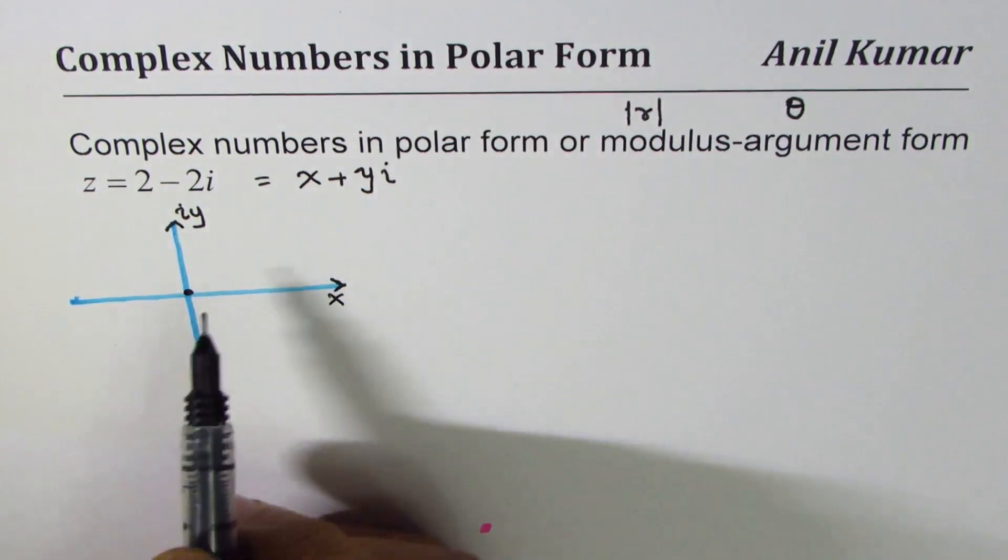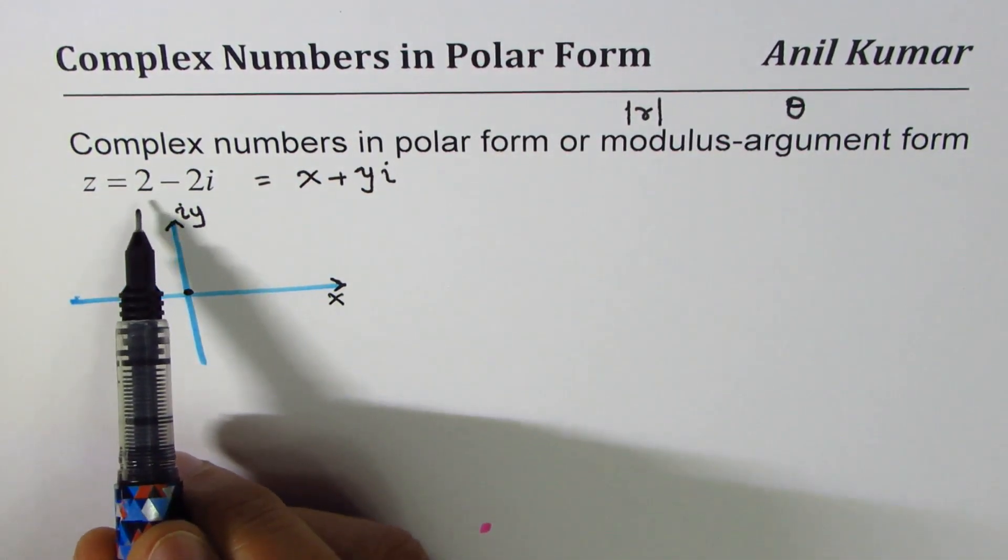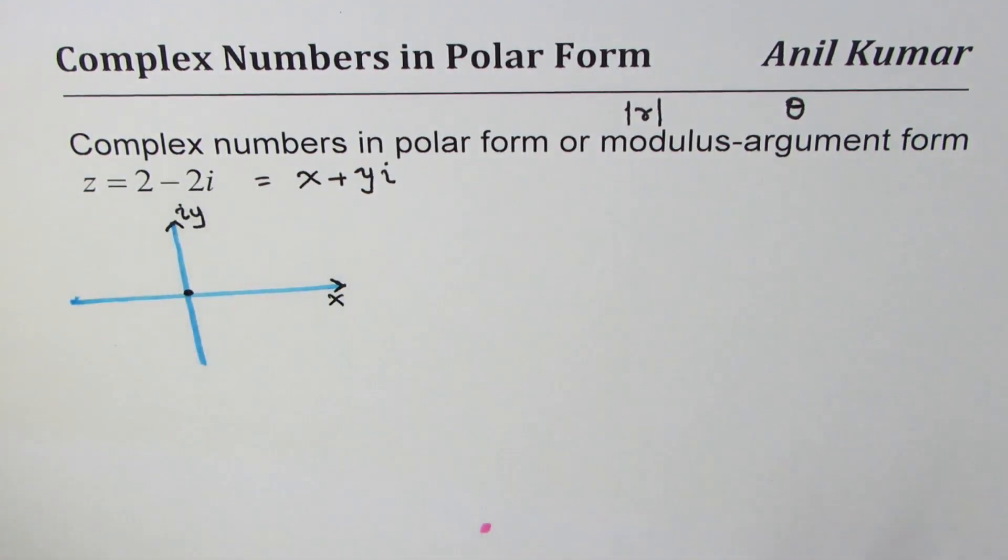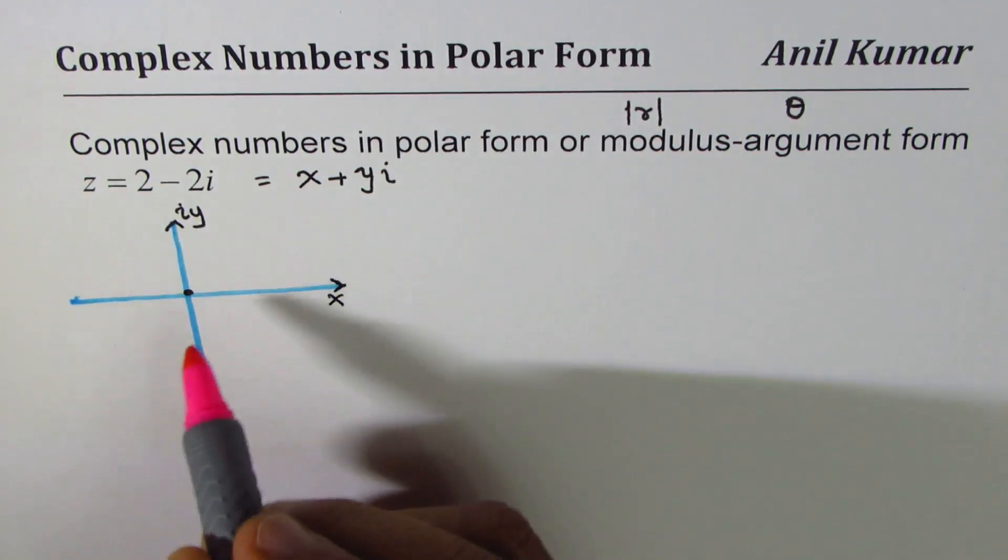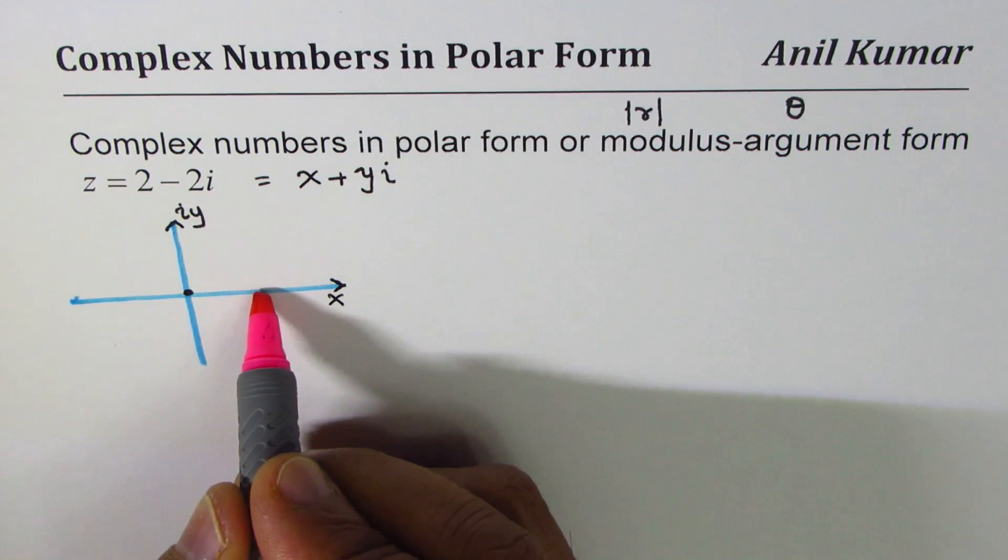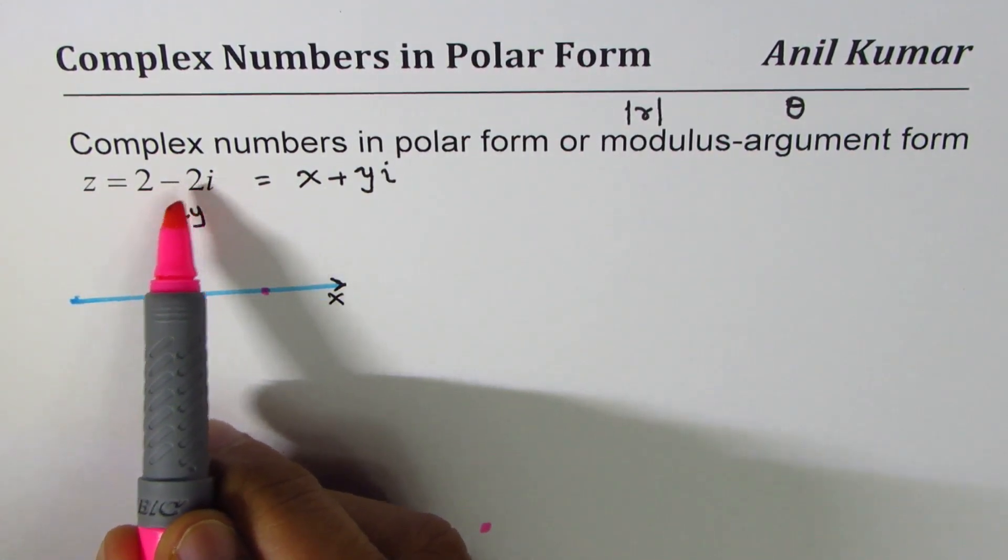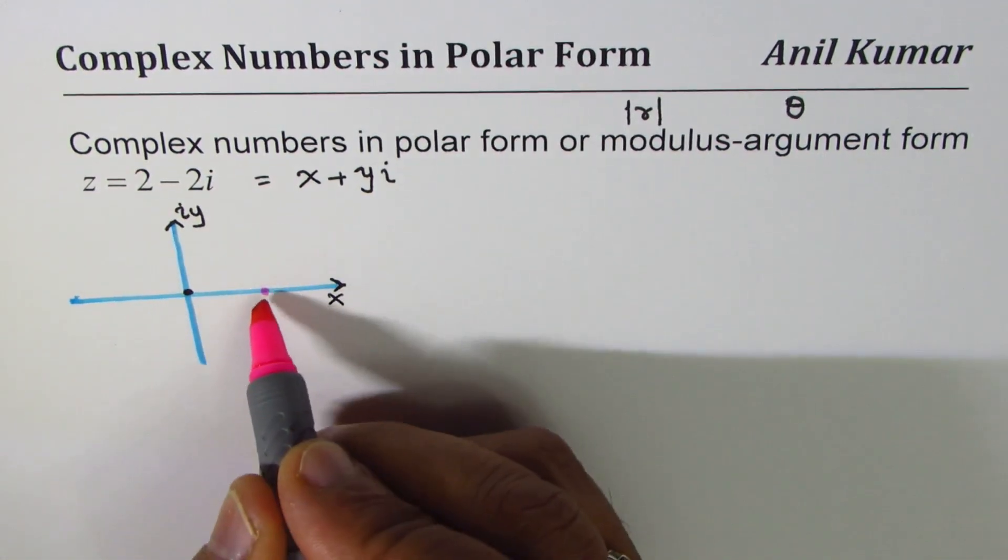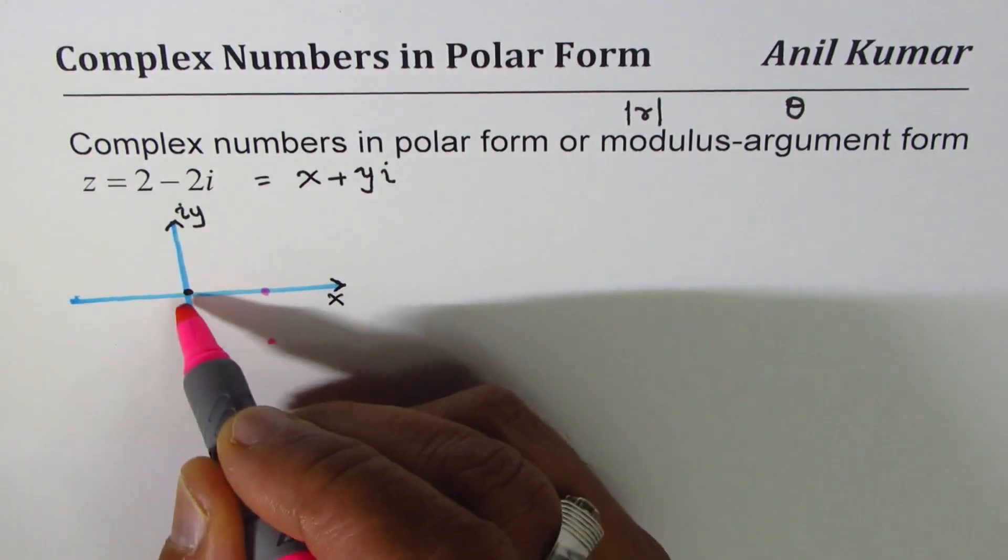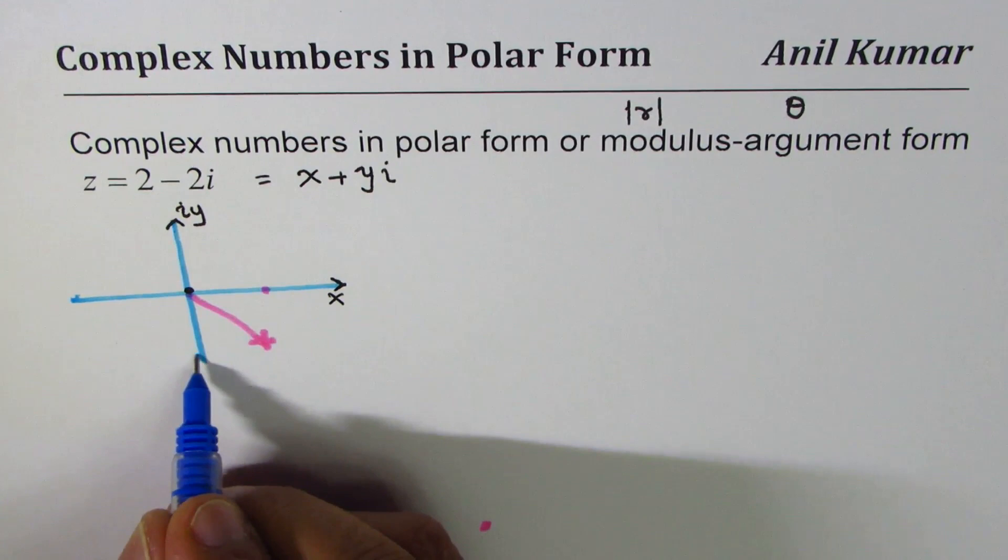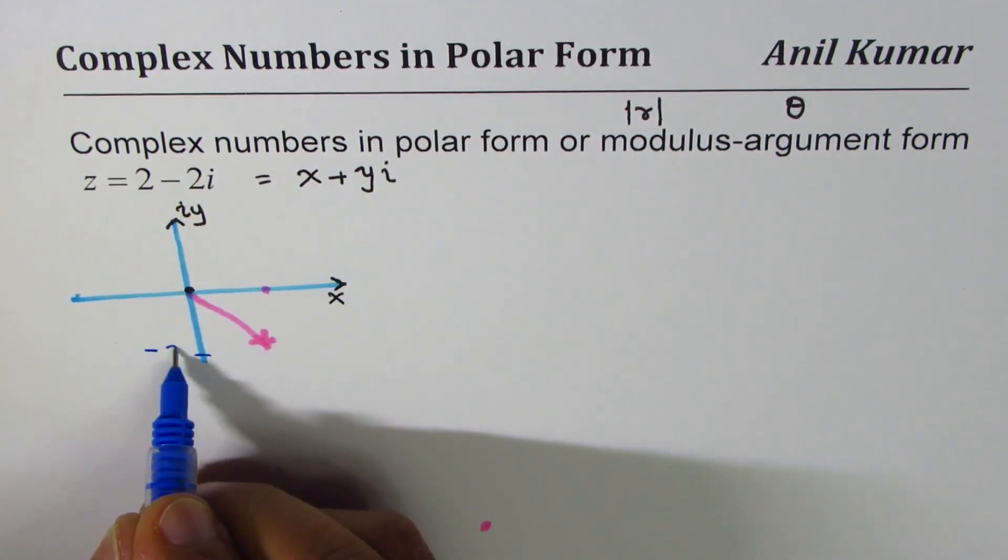The point is the complex number is 2 minus 2i. 2 is positive, that means we are looking for a number which is two units to the right. Let's say this is 2 positive, and then we have minus 2 along the y axis, so it is kind of downwards. So the number could be represented by this arrow here, the complex number where this position is minus 2, this position is 2.